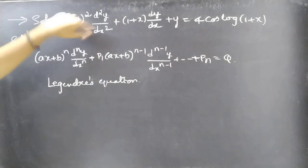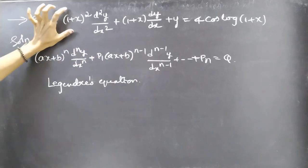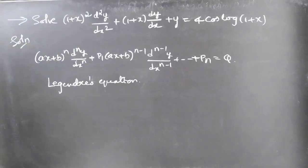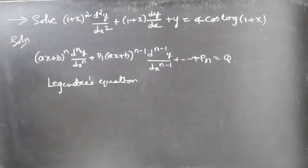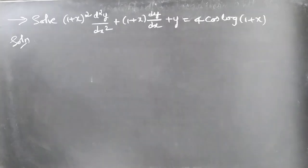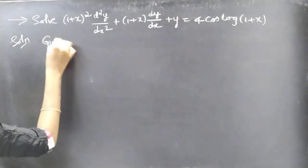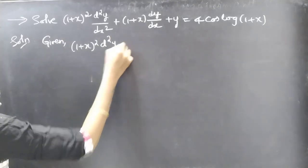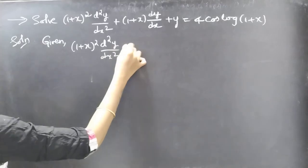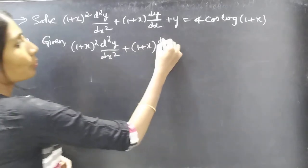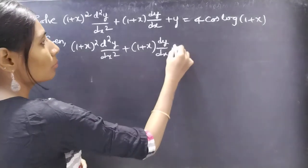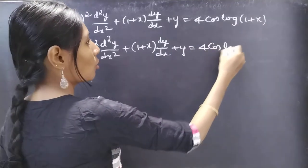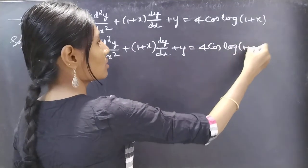We will solve this equation by reducing it to a linear differential equation with constant coefficients by making some substitution. We will find the general solution of the given differential equation. The given differential equation is (1+x)² · d²y/dx² + (1+x) · dy/dx + y = 4cos(log(1+x)), call this equation 1.